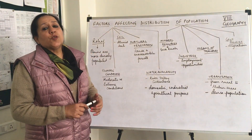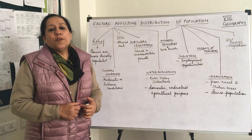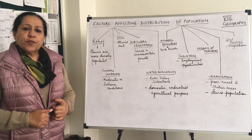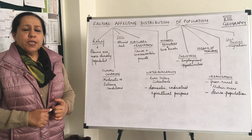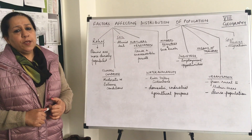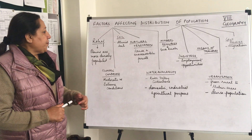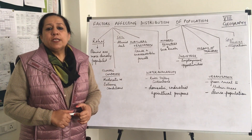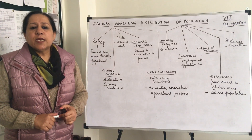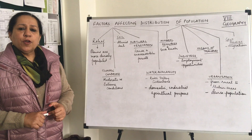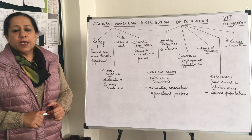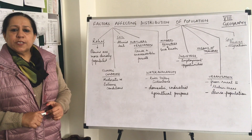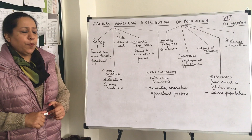The third factor is soil. Fertile areas having alluvial soil will again attract population as agriculture can be easily practiced. Then we have natural vegetation. Dense and inaccessible areas are unsuitable for population, and that is why the Congo Basin and Amazon Basin are thinly populated.